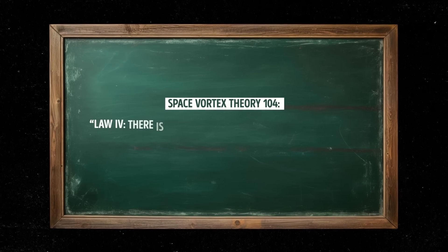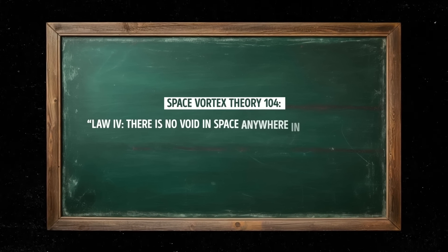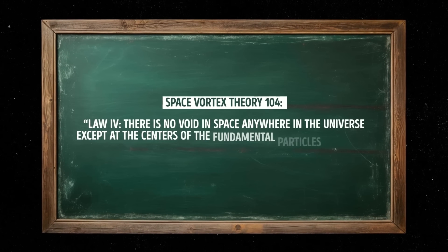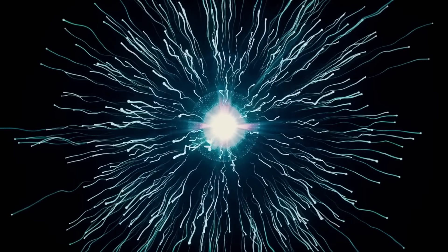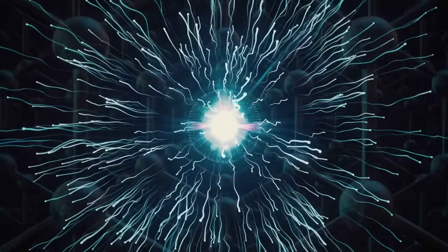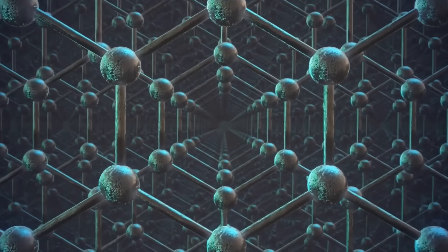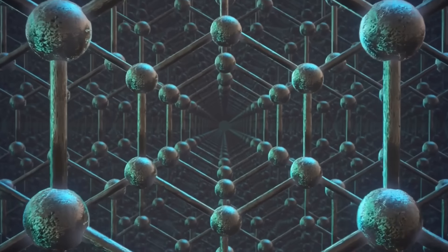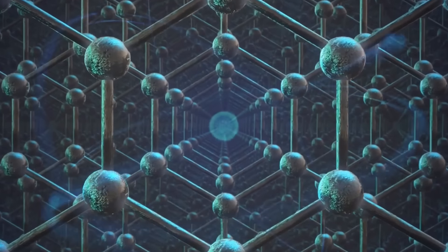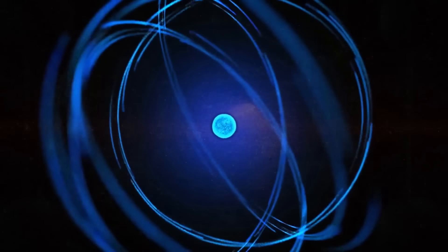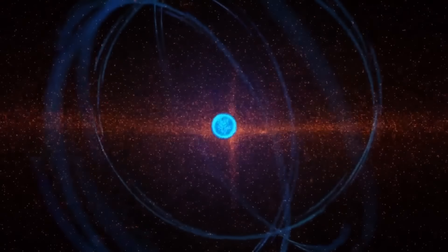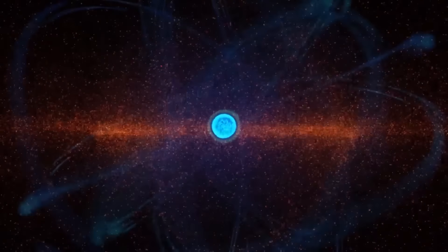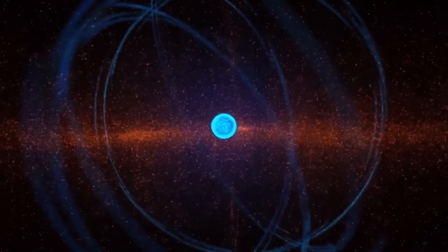Law 4: There is no void in space anywhere in the whole universe except at the centers of the fundamental particles of matter — electrons and positrons. This law states that there's no truly empty space in the universe, and that all space is filled with the fundamental field. Electrons and positrons can be found everywhere, and even the things we consider to be empty, like vacuum, are actually full of tiny particles. The only truly empty spaces in the universe are at the centers of the fundamental particles themselves.